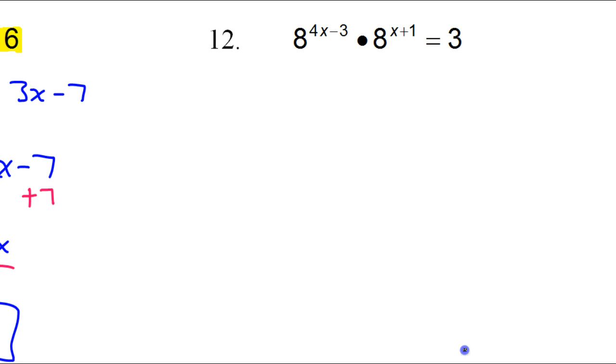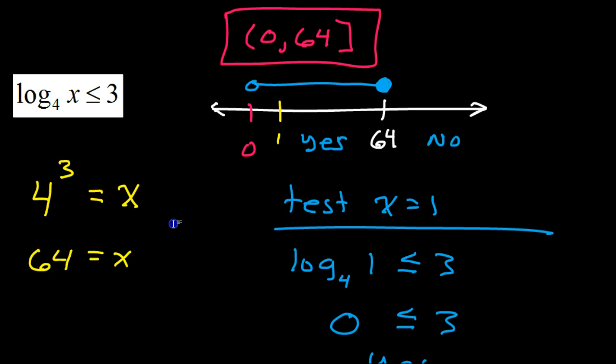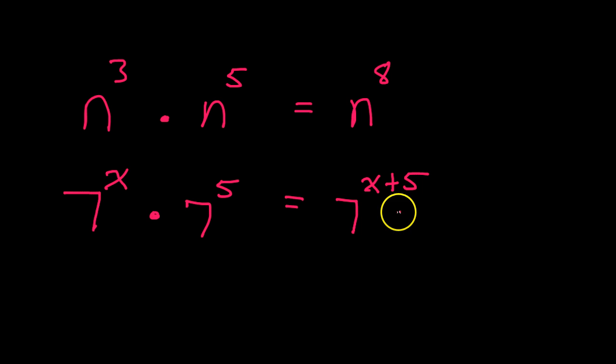And finally, number 12. Now, remember this, people. Let's say if I had n to the third power times n to the fifth power. What would this be? Well, this would be n to the eighth power. We've learned that if we have like bases, we add the exponents. So say if I had 7 to the x power times 7 to the fifth power. How would I combine these? Well, that would be 7 to the x plus 5 power, right? Again, we're adding the exponent. It's just like 3 plus 5 is 8. x plus 5 is x plus 5, right? Keep the 7. Notice that the 7 doesn't become 49 or anything like that.